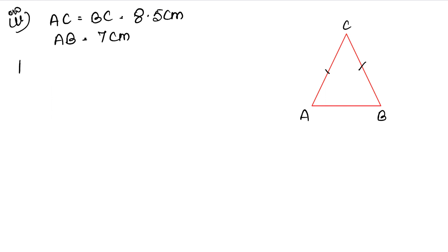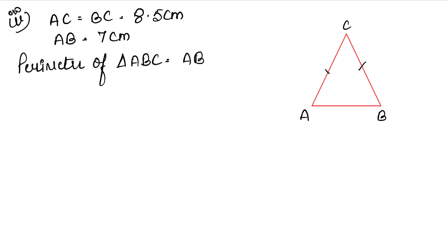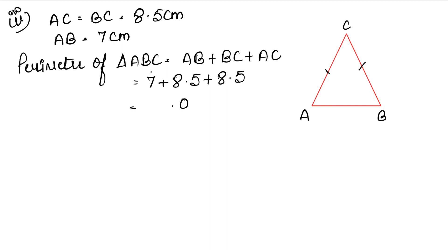So we have to find the perimeter of triangle ABC: AB plus BC plus AC. AB is 7 cm, BC is 8.5 cm, and AC is 8.5 cm. Adding: 5 plus 5 is 10, carry 1; 7 plus 8 plus 8 plus 1 carry is 24. So our answer is 24 cm.